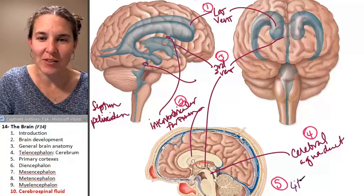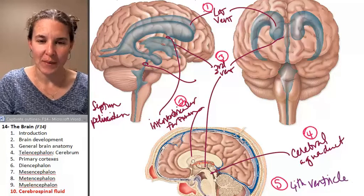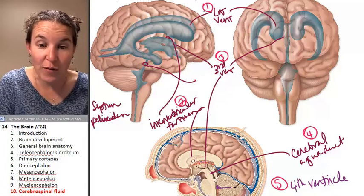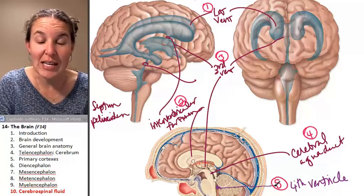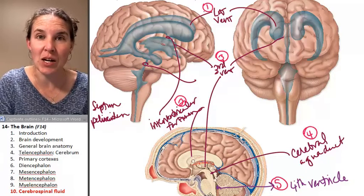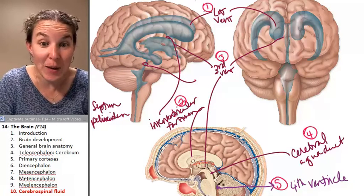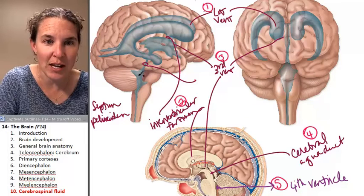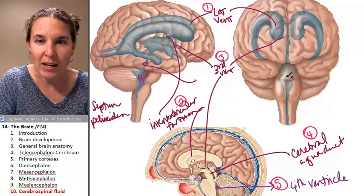The fourth ventricle is between the cerebellum and the pons. It's a space that you can stick your little probe in. And here it is — that's the fourth ventricle.